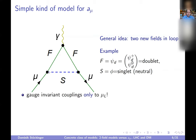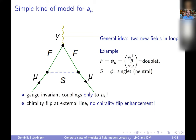A fermion doublet plus scalar singlet can only couple in a gauge invariant way to the left-handed muon. A coupling to the right-handed muon is not possible because the right-handed muon is a gauge singlet. So we can only couple to mu_L. That means we need for g-2 a chirality flip, and this chirality flip can only happen at the external muon line — not inside the loop. For this reason, we get no chirality flip enhancement from this model.